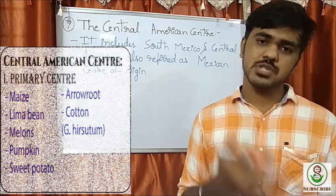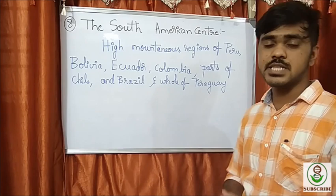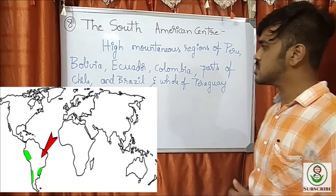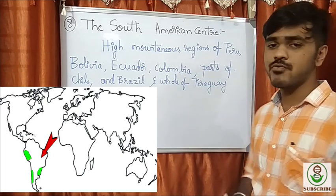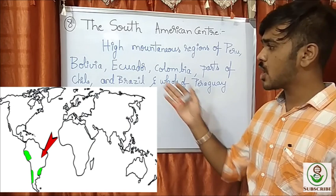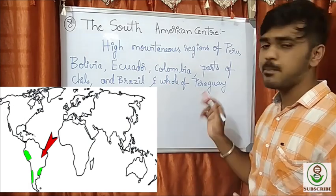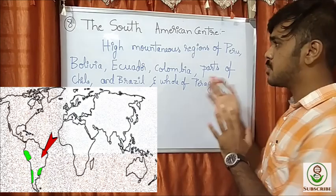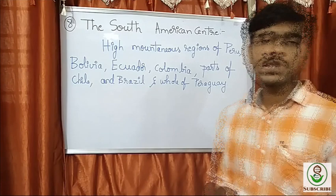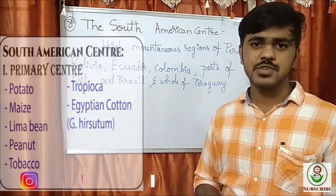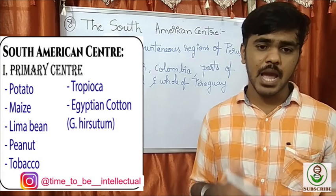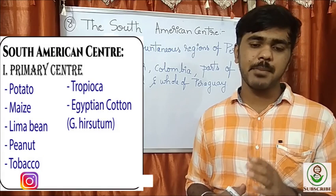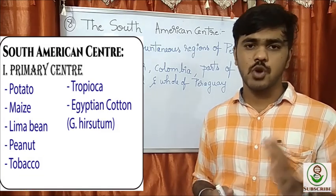The last of Vavilov's original eight is the South American center of origin. It includes the high mountainous regions of Peru, Bolivia, Ecuador, Colombia, and parts of Chile, Brazil, and Paraguay. It is the primary center of origin for crops like potato, maize, lima bean, peanut, Egyptian cotton (Gossypium barbadense), tobacco, and others.